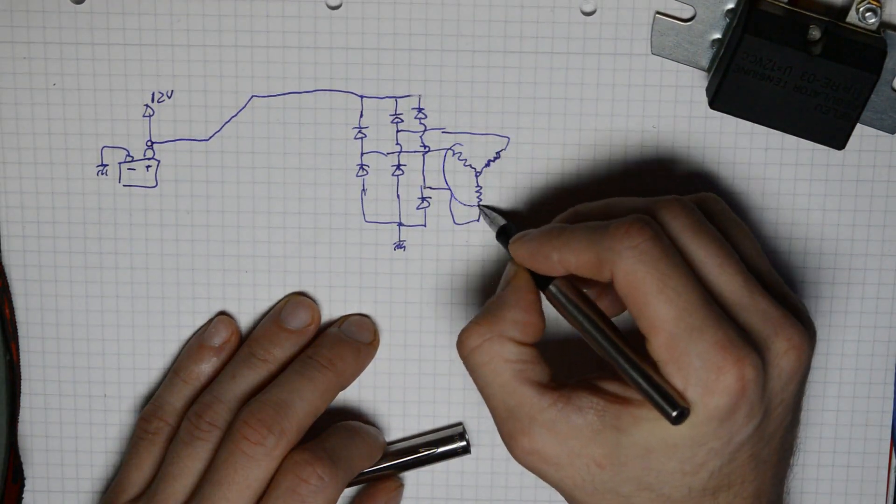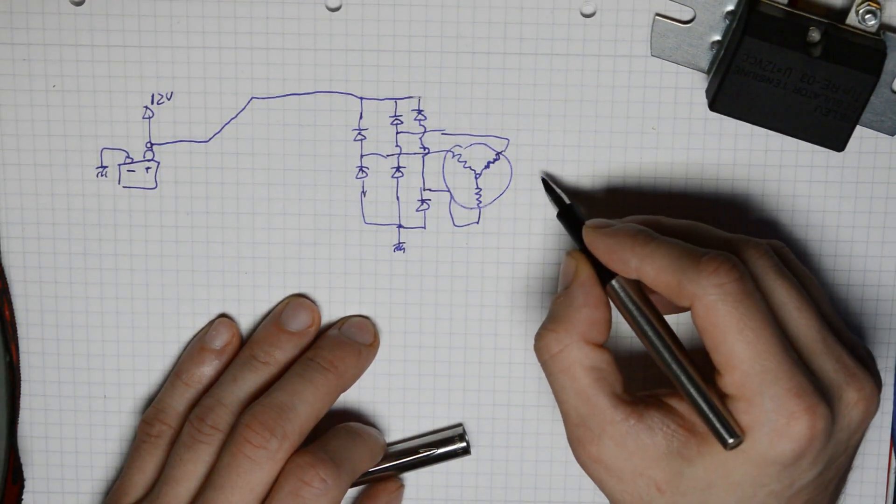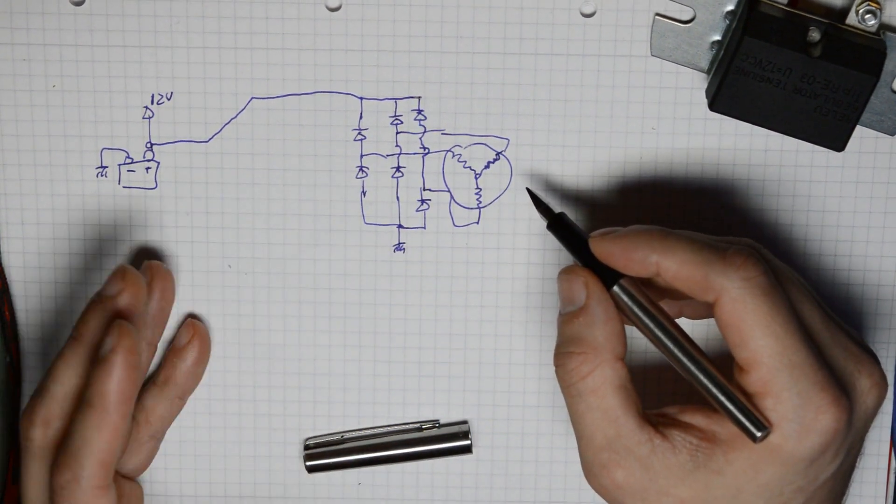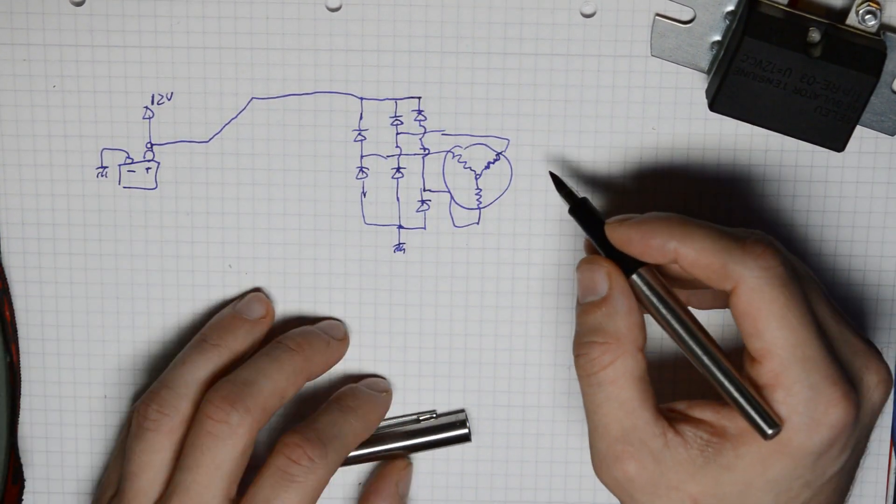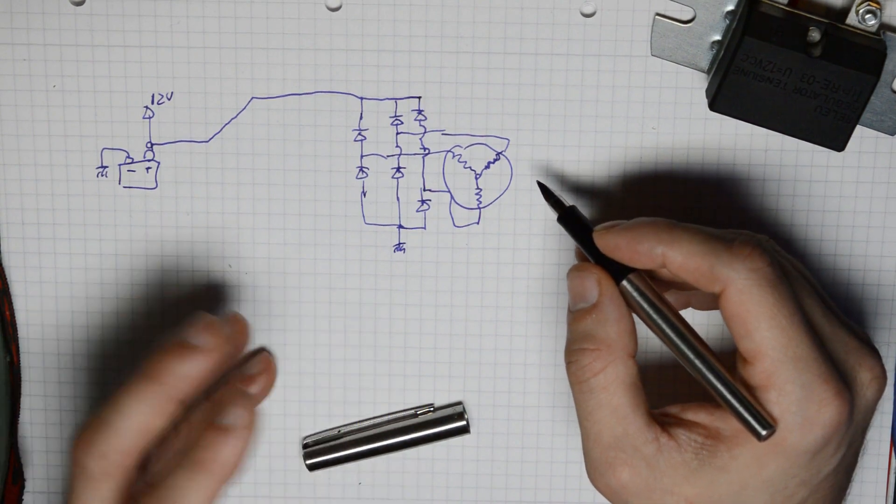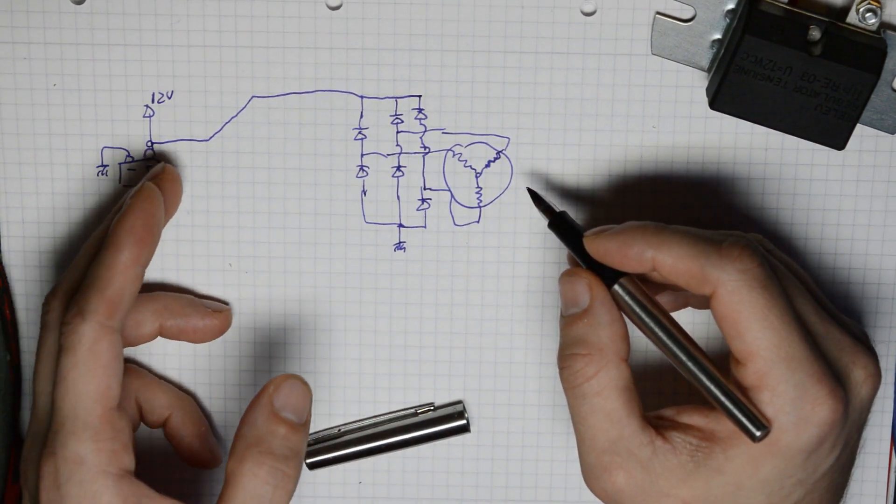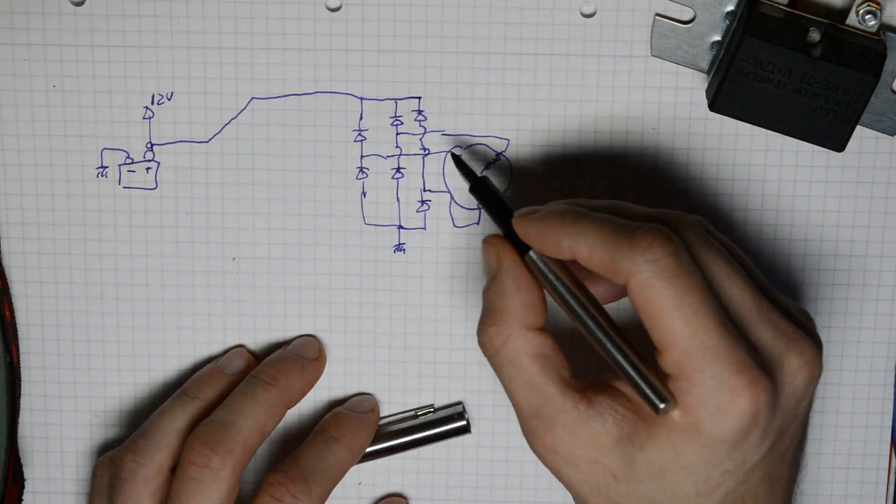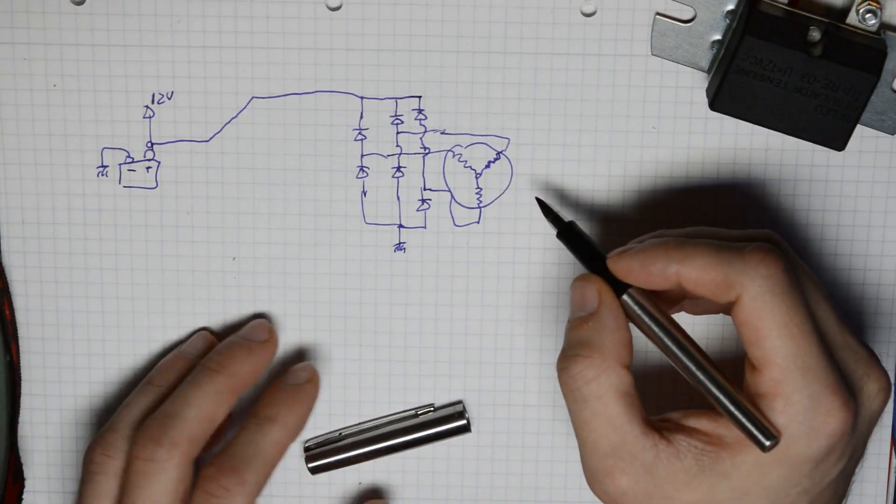Now your alternator is always connected to the driveshaft, so whenever the car is running, this thing basically can charge the battery. So what do you do to prevent it from destroying the battery from overcharging it, since you have no switch on the power lines?